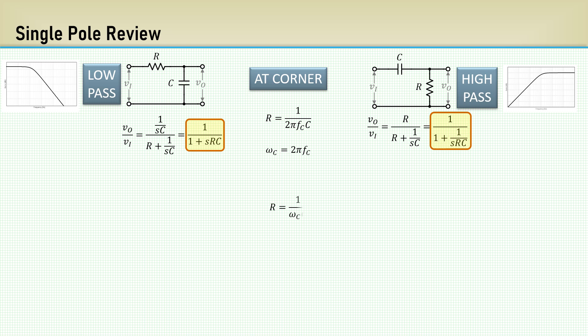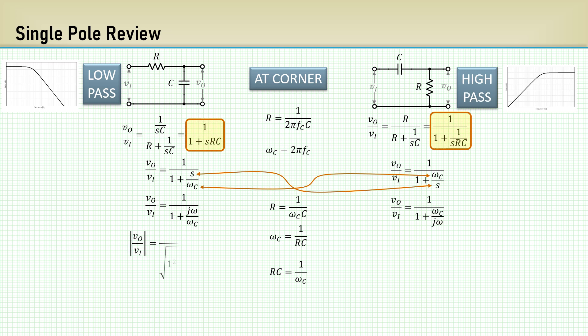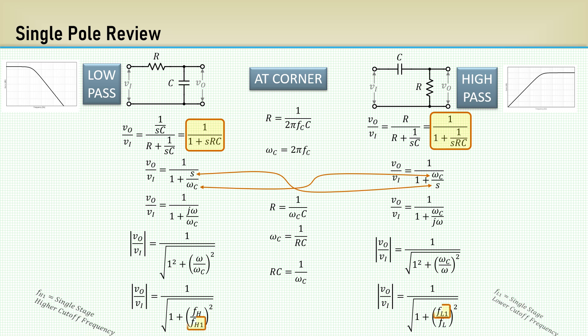We can substitute omega-C for 2 pi FC and therefore replace every occurrence of RC with 1 over omega-C. Notice the transfer functions are identical except for the fractions in the denominator which are inverse to one another. Plugging in J omega for S, we can now set this up to get the magnitude function. We don't need phase. Since we have a ratio of omegas, the two pi's cancel and we can work with frequency ratios.